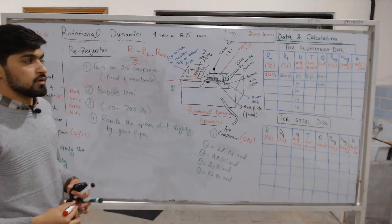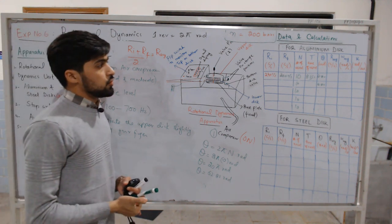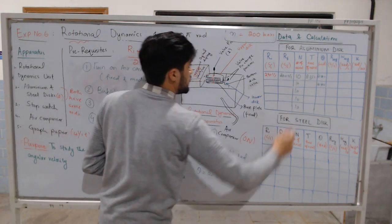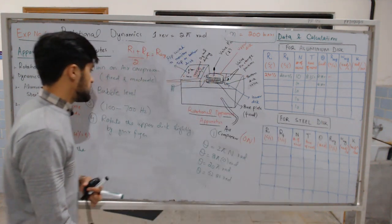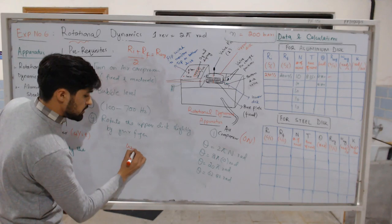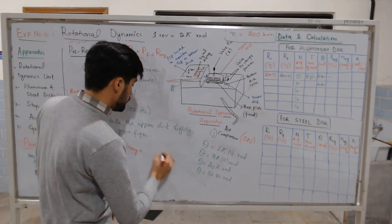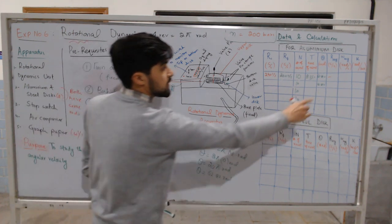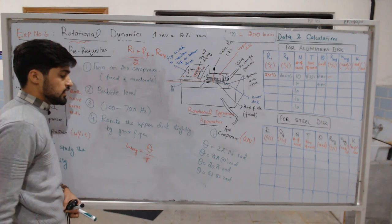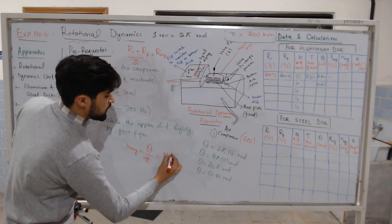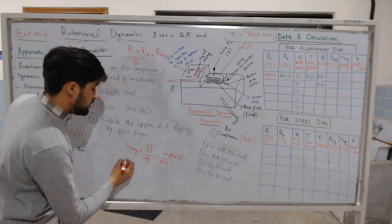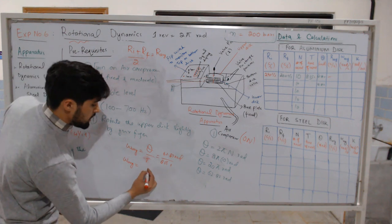Theta can be calculated using theta = 2πn, where n = 10 revolutions. So theta = 2π × 10 = 20π = 62.83 radians. The average reading R_avg is the average of initial and final readings: R_avg = (Ri + Rf) / 2. This gives the average frequency in counts per second. The average angular velocity omega_avg = theta / t = 62.83 / 8.35, giving a value in radians per second.